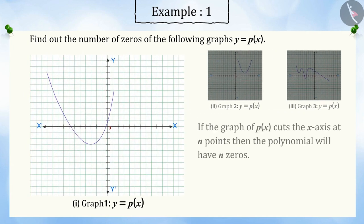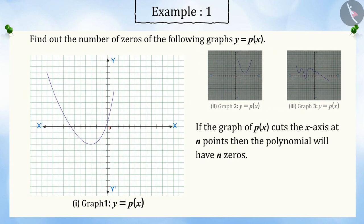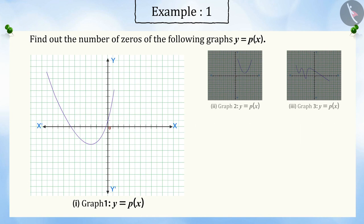Mohan remembers that if the graph of px cuts the x-axis at n points, then the polynomial will have n zeros. Can you tell the number of times this graph intersects the x-axis?